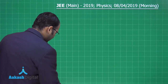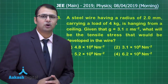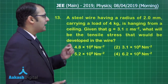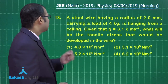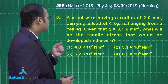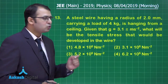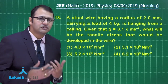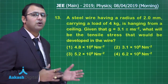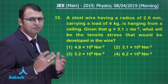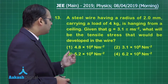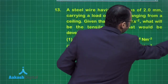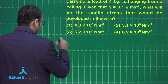Let's start with question number 13, which belongs to the section of mechanics from the chapter on solids. As per the question, a steel wire having a radius of 2 millimeters carrying a load of 4 kg is hanging from a ceiling. G is given as 3.1π meters per second square — use this value only, it will simplify calculations. We need to find the tensile strength, that is F/A, developed in the wire.